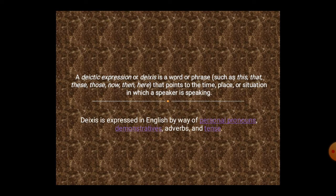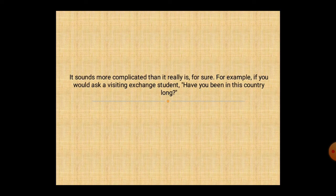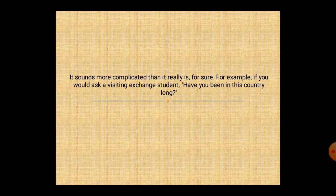As you can see, this is the definition of deixis. A deictic expression or deixis is a word or phrase such as this, that, those, now, then, here that points to the time, place, or situation in which a speaker is speaking. Deixis is expressed in English by way of personal pronouns, demonstrative adverbs, and tense. It sounds more complicated than it really is.